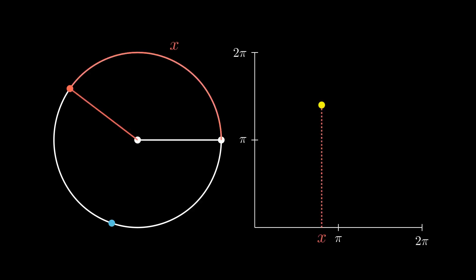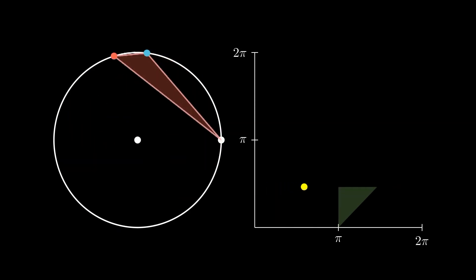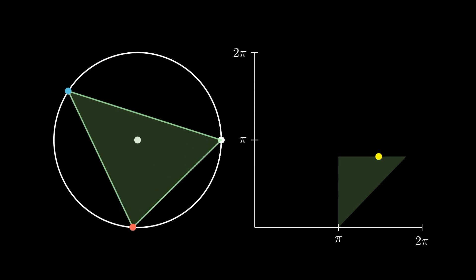Consider this angle as x, which moves the yellow dot horizontally in the phase space, and this angle as y, which moves the yellow dot vertically. Each pair of angles x and y corresponds to one yellow dot in the square. You can look for all favorable outcomes by scanning the whole phase space.